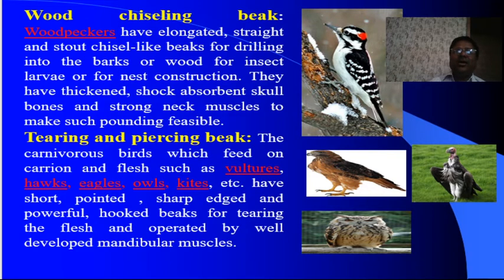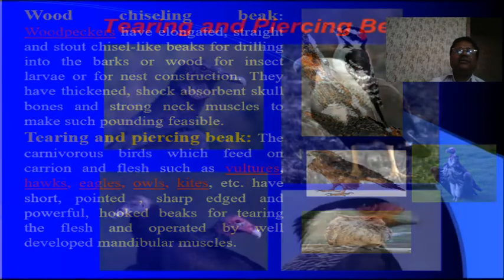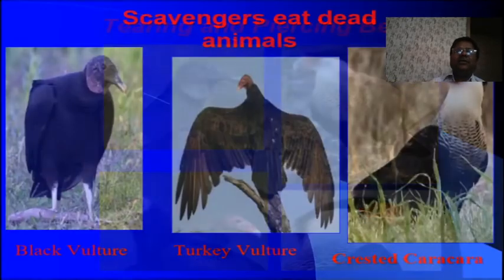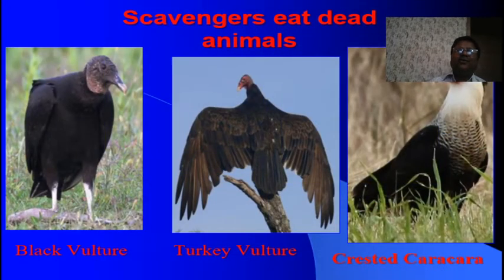Tearing and piercing beak — particularly the carnivorous birds are examples of this type. These birds feed on carrion and flesh. Examples are vultures, hawks, eagles, owls and kites. They have a very strong, short, pointed, sharp-edged and powerful hooked beak for tearing flesh, operated by well-developed mandibular muscles. Scavenger birds such as vultures, which feed on dead and decayed animals, are called the cleaners of the earth and have a very strong beak.